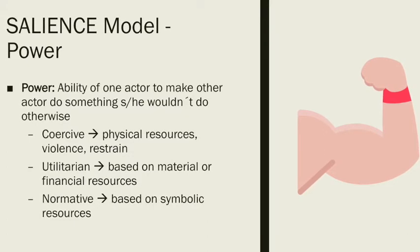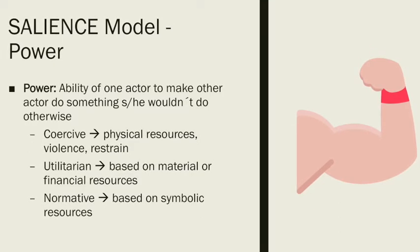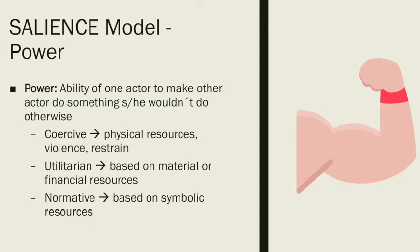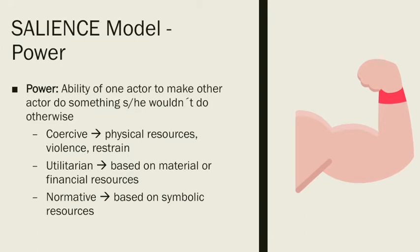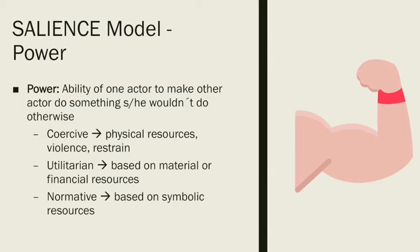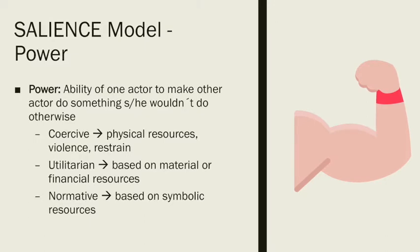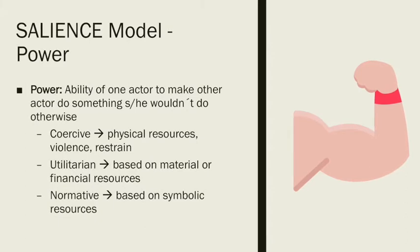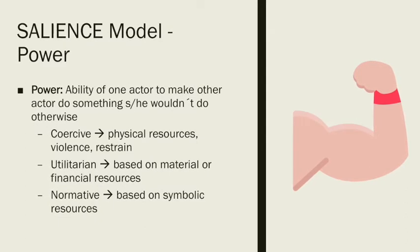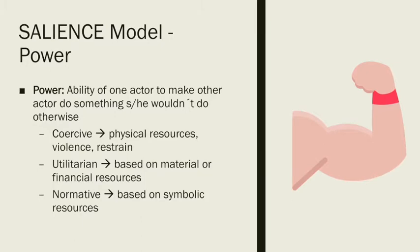Power can be brought by three different means. The first is coercive power, exercised by means of physical resources, violence, or restraint. In a country like Colombia, armed groups have exercised coercive power for a long time, and companies have seen the need to put those actors in their stakeholder map to identify the risk they can pose. Power can also be exercised by means of material or financial resources — that is called utilitarian power.